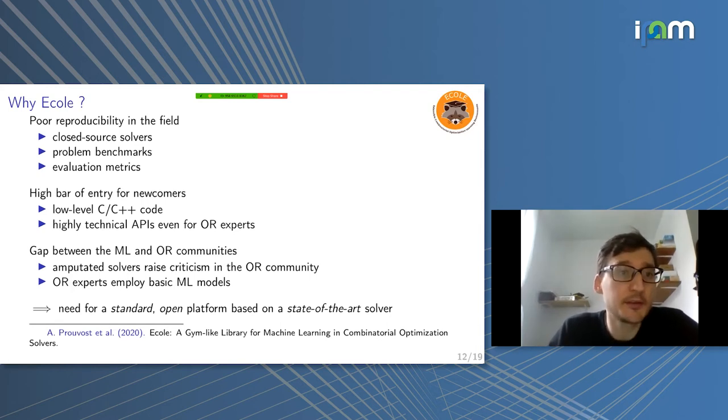The second issue is the high bar of entry for newcomers. All those traditional combinatorial optimization solvers are implemented in fast C, C++ code. If you want to interact with them in some specific parts, you will have to use low-level C or C++ code. This is very different from the machine learning ecosystem, which relies heavily on Python and standard APIs, NumPy, PyTorch, and so on. So there is some engineering work to do here.